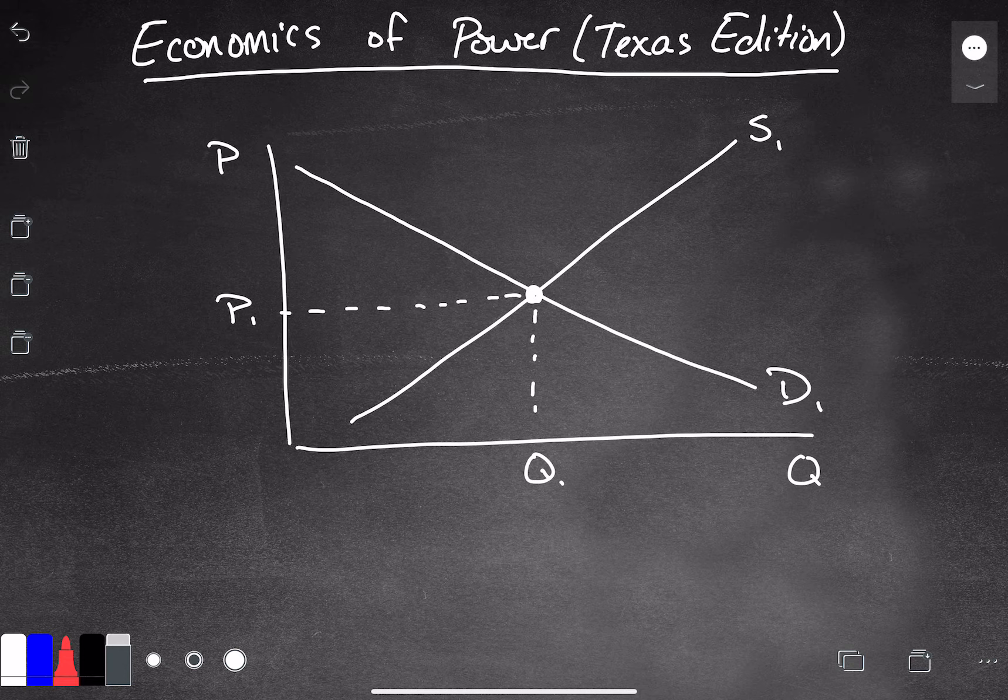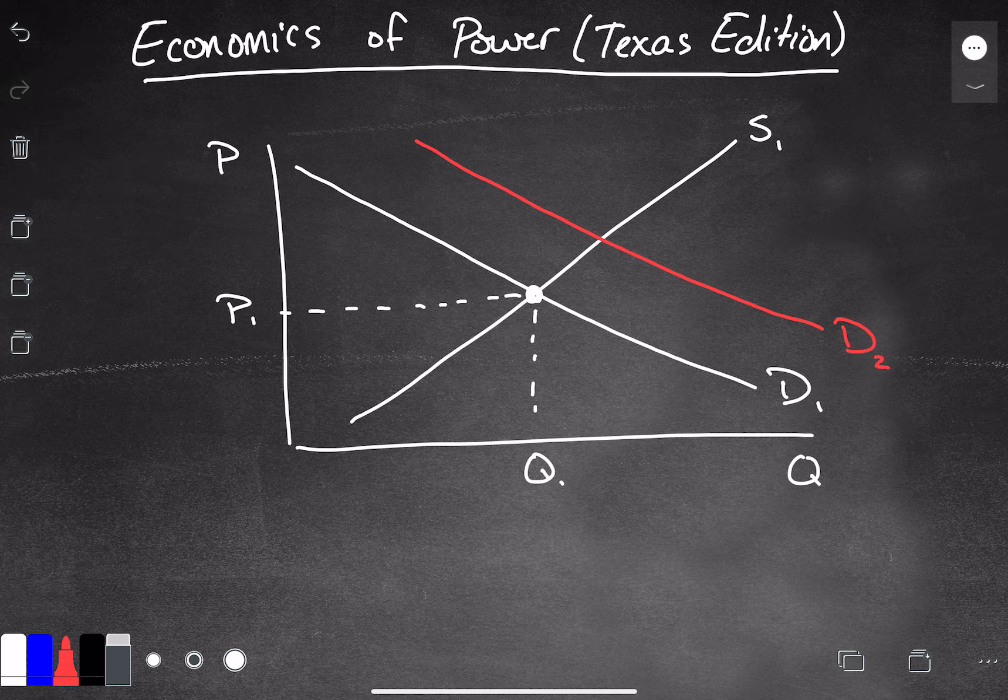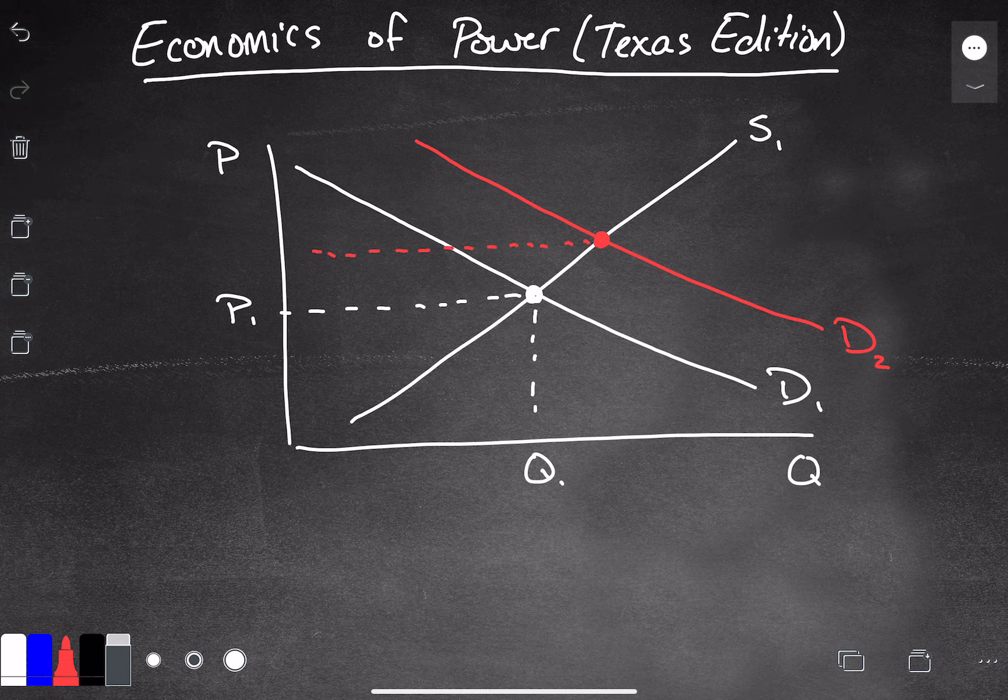Well, that's just going to put an increase in demand for electricity in Texas. And so the new equilibrium point should be about here. And that's going to cause the price of electricity to go up, but it will also cause the quantity of electricity produced to increase as well.